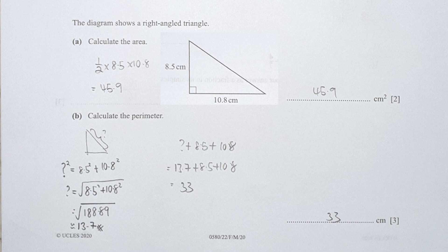For question 7, calculate the area of this right-angle triangle. Base times height times half gives you 45.9.